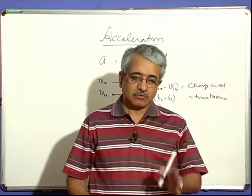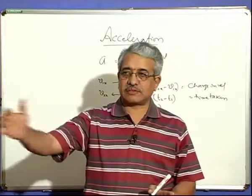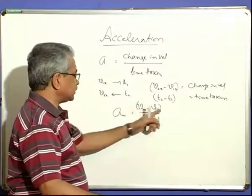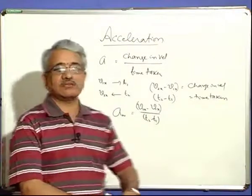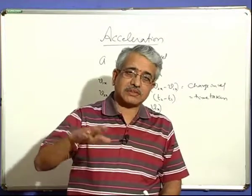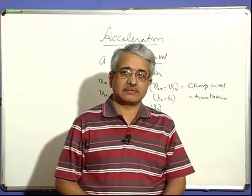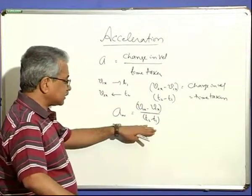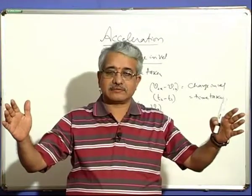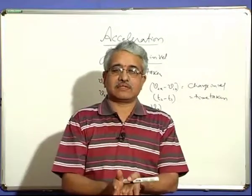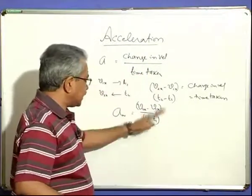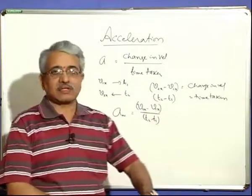To find average acceleration, note the speed when you start, then check the speed after 10 or 15 seconds on the speedometer, take the difference — that change in velocity over the time gives average acceleration. Every moment there can be a change in velocity, so average acceleration is the change in velocity over a time period, averaged over that time. This is represented as delta V by delta T.